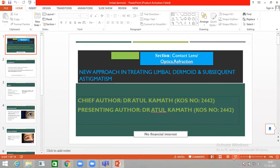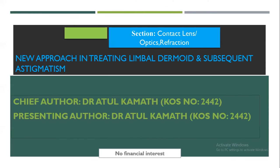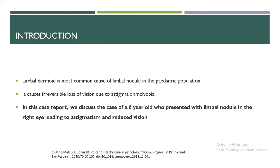Good afternoon, ma'am. Is my screen visible? Yes, visible. Okay. So my topic for today is a new approach in treating limbal dermoid and subsequent astigmatism. The introduction: limbal dermoid is the most common cause of limbal nodule in the pediatric population. It causes irreversible loss of vision due to astigmatic amblyopia. We report a case of a six-year-old boy who presented with limbal nodule in the right eye leading to astigmatism and reduced vision.